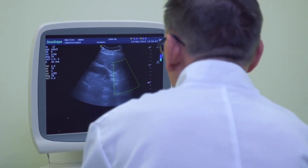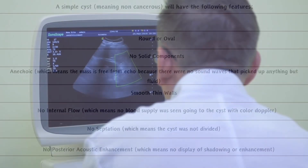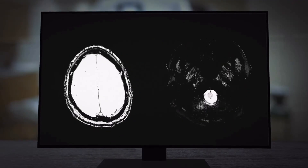When trying to differentiate between a simple cyst and a cancerous mass, your doctor will look for several features on a scan or ultrasound. A simple, non-cancerous cyst typically has the following features: round or oval shape, no solid component, anechoic (meaning no sound waves picked up anything but fluid), smooth thin walls, no internal flow seen through color Doppler, no septation (meaning the cyst is not divided), and no posterior acoustic enhancement.